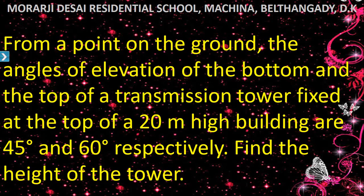From a point on the ground, the angles of elevation of the bottom and the top of a transmission tower fixed at the top of a 20 meter high building are 45 degrees and 60 degrees respectively. Find the height of the tower.